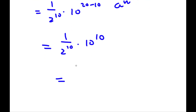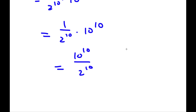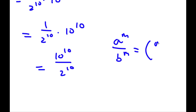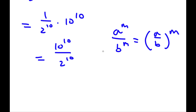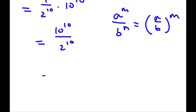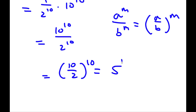Now if I multiply these two, I get 10 to the power of 10 over 2 to the power of 10. And if I have something in the form a to the power of m over b to the power of m, this is equal to a over b to the power of m. So 10 to the power of 10 over 2 to the power of 10 is equal to 10 over 2 to the power of 10. And 10 over 2 is 5, so I have 5 to the power of 10, and this is my answer.